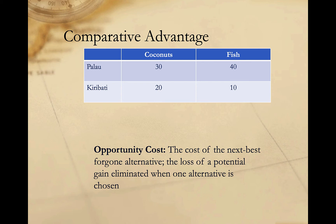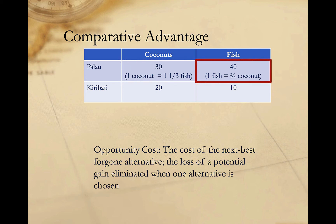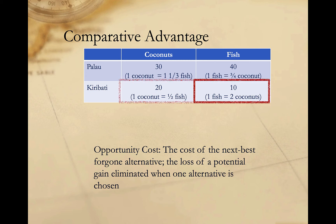Let's look at the opportunity cost of each country's options. If Palau chooses to focus on just coconut production, it gains 30 coconuts but gives up 40 fish — its opportunity cost for one coconut is one and one-third fish. Conversely, if Palau focuses on fishing, it gains 40 fish but gives up 30 coconuts — its opportunity cost for one fish is three-quarters of a coconut. If Kiribati chooses to focus on coconuts, it gives up one fish for every two coconuts, so its opportunity cost for coconuts is half a fish. And if Kiribati focuses on fishing, it gains 10 fish but gives up 20 coconuts — the opportunity cost for one fish is two coconuts.